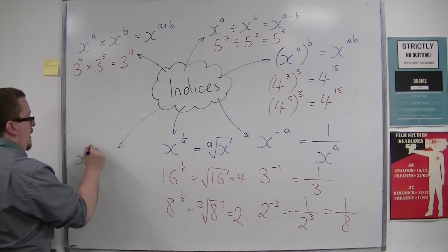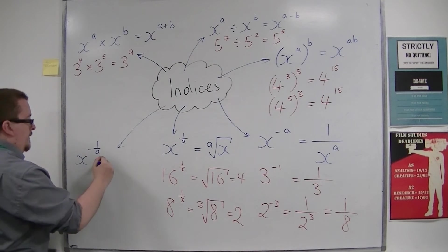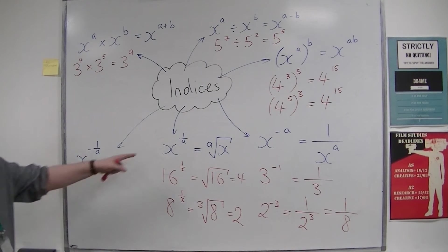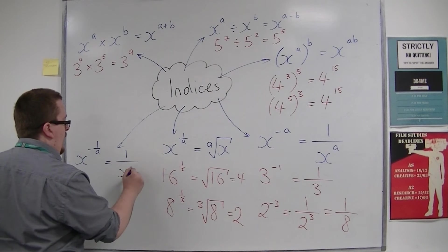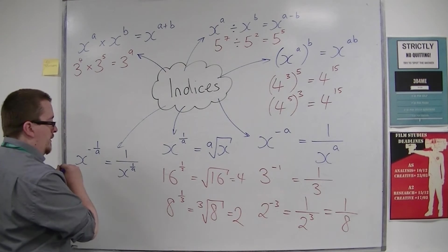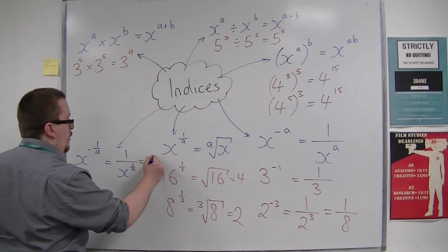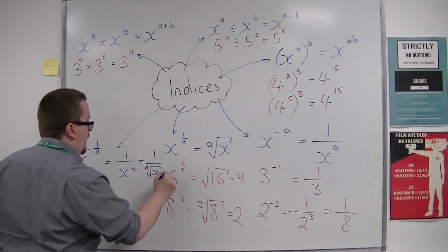Let's do minus 1 over a. Combining those two, this would be 1 over x to the power of 1 over a, which would be 1 over the ath root of x.